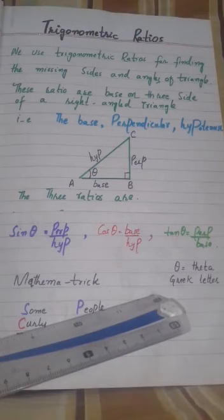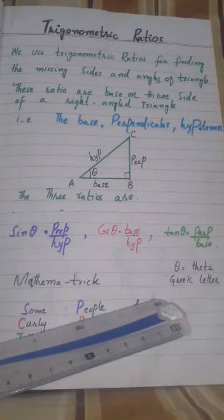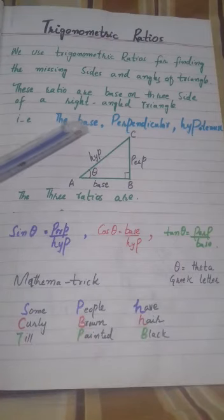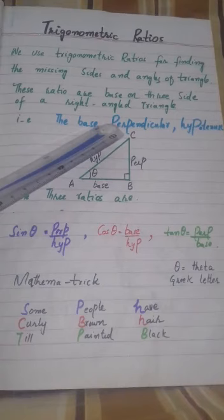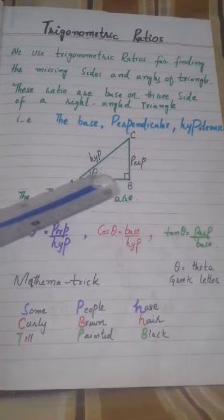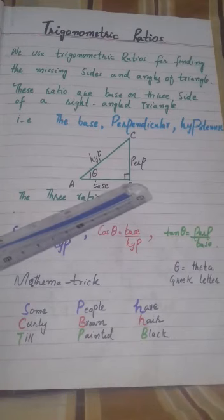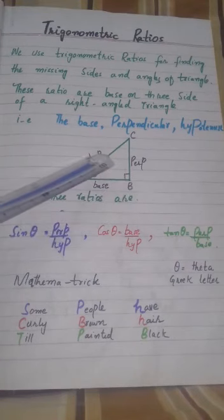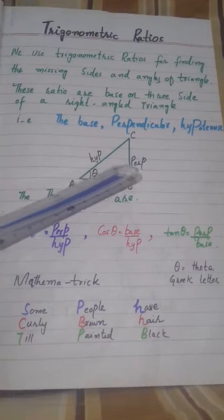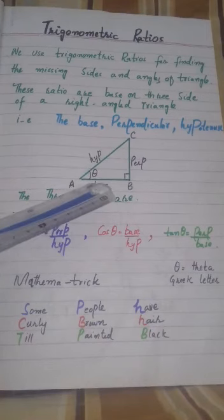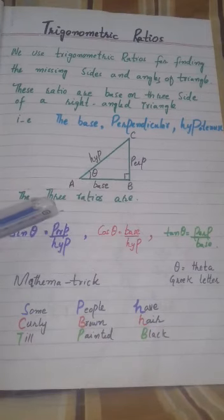These ratios are based on the three sides of a right angle triangle. Every right angle triangle has three sides: base, perpendicular, and hypotenuse. This is the symbol of the right angle. Opposite to 90 degrees is the hypotenuse, opposite to the given angle is the perpendicular, and the remaining side is the base.